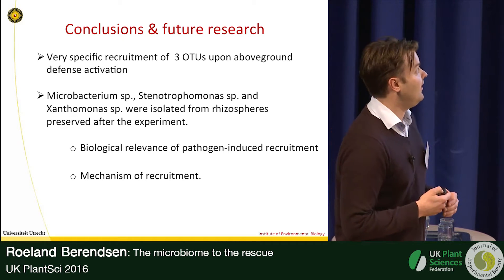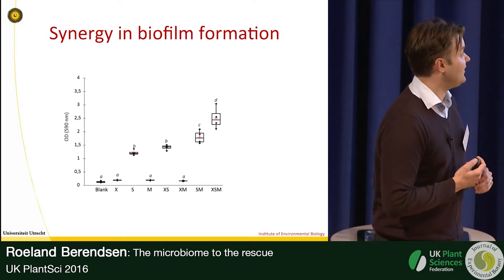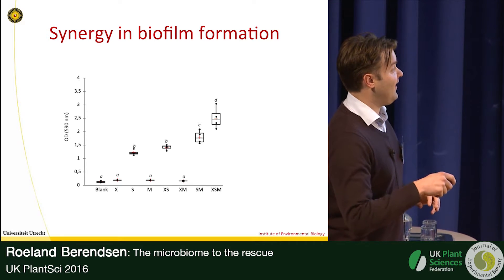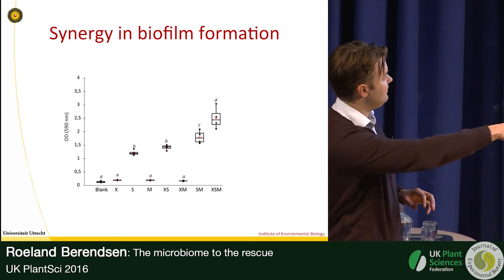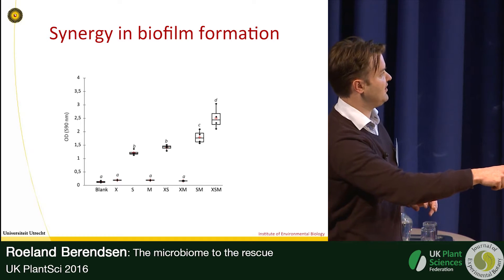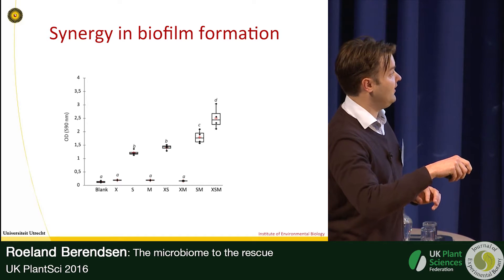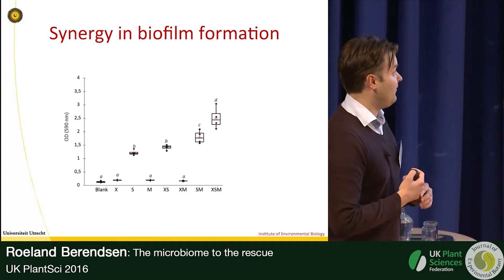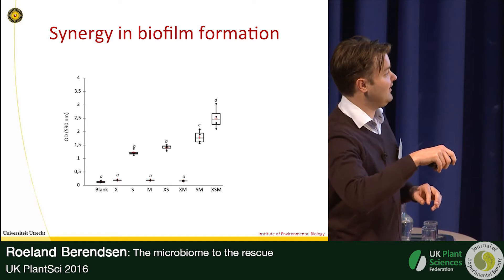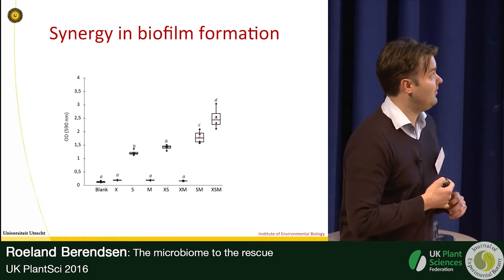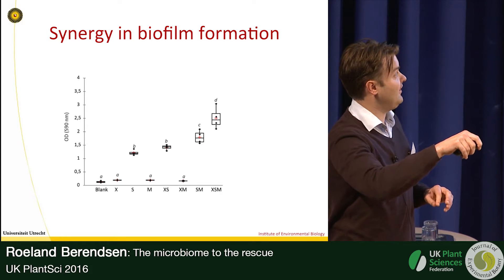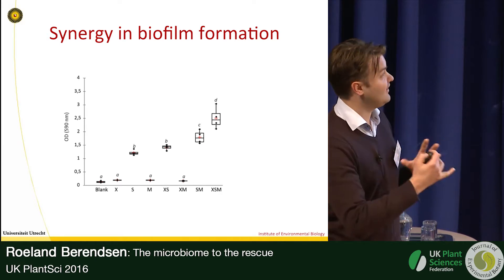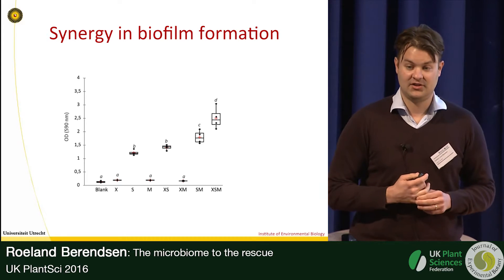We tested how these bacteria interact by looking at biofilm formation on plastic. We found that by themselves, the Xanthomonas and the Microbacterium don't form a lot of biofilm, while Stenotrophomonas can form a biofilm reasonably well. But when you start combining these three strains, the biofilm becomes much thicker, and especially the combination of all three gives the most thick biofilm.